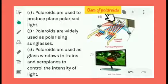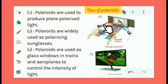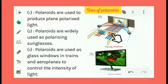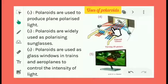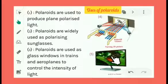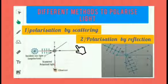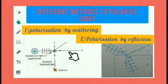The uses of polaroids: Polaroids are used to produce plane polarized light. They are widely used as polarizing sunglasses. Polaroids are used as glass windows in trains and aeroplanes to control the intensity of light. Polaroids are used to view 3D pictures — one eye receives light polarized in one plane, the other in a different plane, and the combination gives the 3D effect. They are also used in LCD (liquid crystal display) TVs.